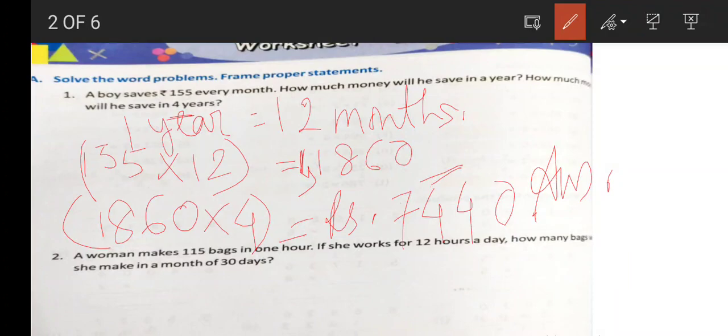One year is equal to twelve months. In one month how much money will he save, in one year, in four years. So we multiply to get 7440.